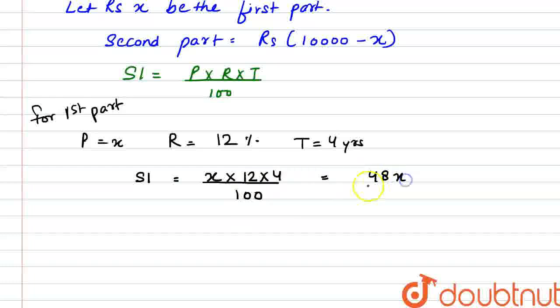And if we divide it from 4, so we can write it like Rs. 12 by 25 into x. So, this is the first part of simple interest.